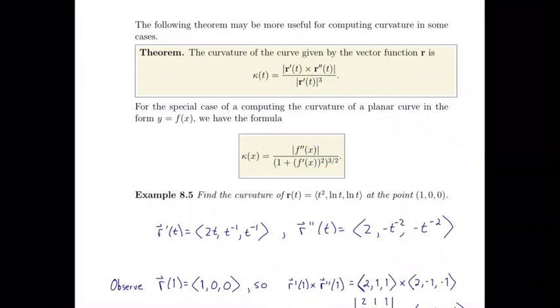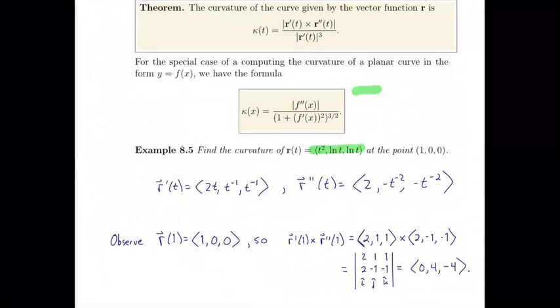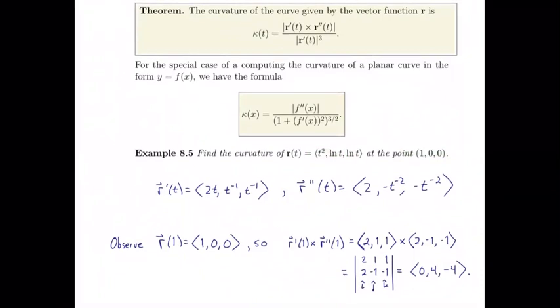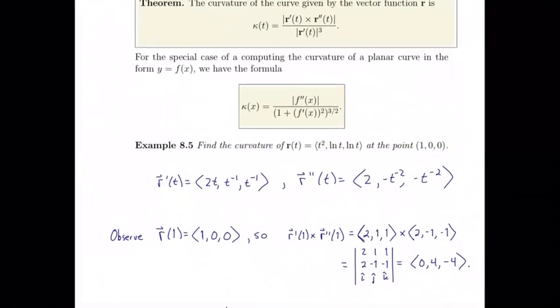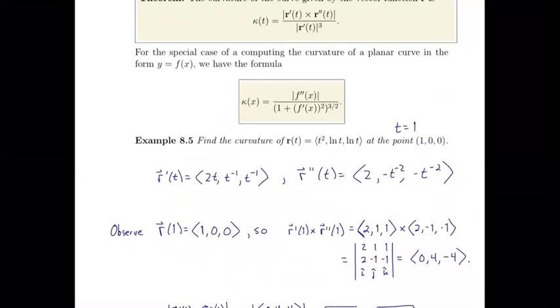So, Example 8.5 below says find the curvature of R of t, which is t squared, natural log t, natural log t at the point 1, 0, 0. So, we just need to realize when 1, 0, 0 occurs. Well, when t is equal to 1, we have 1, natural log of 1 is 0, natural log of 1 is 0. So, we can immediately point out that this occurs when t is equal to 1. So, now we know what values to plug in.